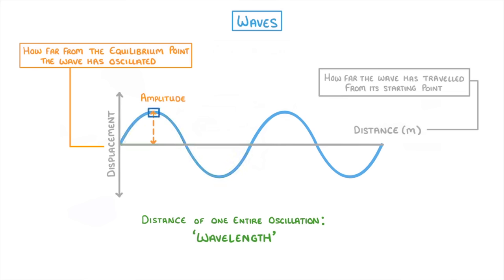Or it could be from the very top of a wave, which we call the crest, down and back up to the next crest. It just has to be one entire oscillation. And the opposite of the crest is called the trough.